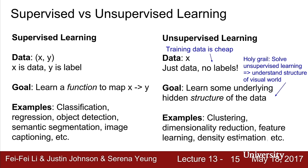Unsupervised learning is a huge and exciting area of research. Training data is cheap since it doesn't require labels, so we're able to learn from a lot of data at once. It's still a relatively unsolved research area, but it holds the potential of helping us understand the structure of the visual world.